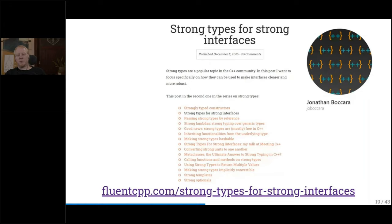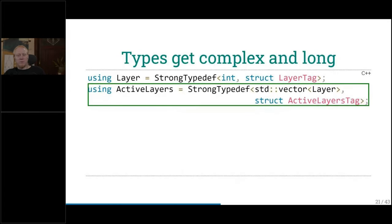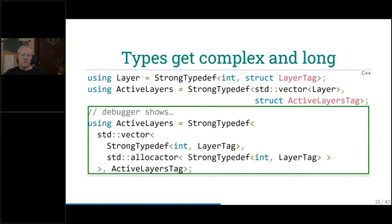What's the thing with strong types here? The first thing is, if we want to compose strong types. So we have our layer that we defined before. And now we have, for example, a vector of layers. But not any vector of layers. We have meaning to that. So these are the active layers of layers. And the definition doesn't look too awful, just like before. But if you look into your debugger, you will see something like this. So these types become very complex and very long. Because a vector also has an allocator. And this allocator also based on the strong type. So if you go some layers deep, then it will become strange. And I've seen that.